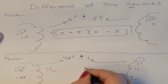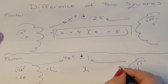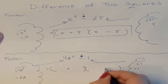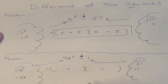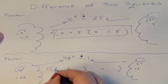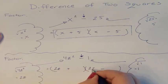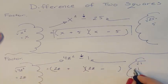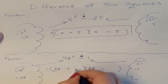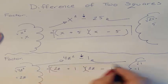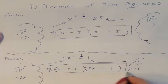So factoring this, here are my two parentheses — one's plus, one's minus. The first term goes in the front, the last term goes in the back. And this is my factored difference of squares.